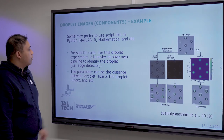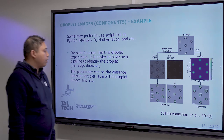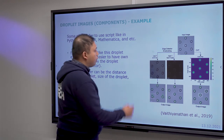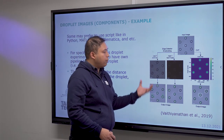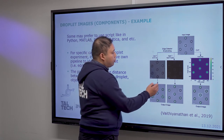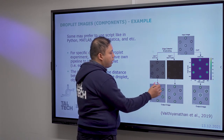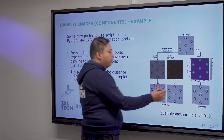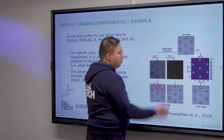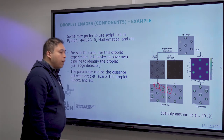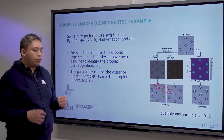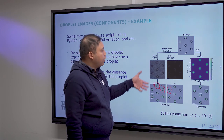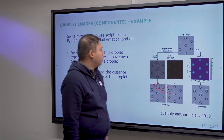Another example is from Anathan et al., who used droplet entrapment to isolate droplets and then detect them when trapped. This is quite unique because the pipeline starts not just from the image — they also designed the chip itself to isolate and trap the droplets.